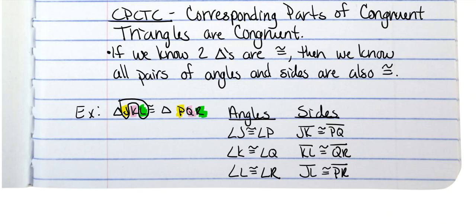We can always come up with another completely different congruency statement, which just means we aren't going to name the first triangle JKL — we're going to change the order. So let's do KLJ: K is pink and goes with Q, L is green and goes with R, and J is yellow and goes with P. You do have to change the order of the second triangle if you change the order of the first one.